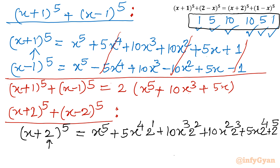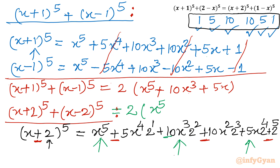For (x - 2)^5, the minus sign causes every other term to be negative. Adding both expansions, the even-power-of-2 terms cancel and we get 2 times (x^5 + 40x^3 + 80x). Here 10 × 4 = 40 for the x^3 coefficient, and 5 × 16 = 80 for the x coefficient.